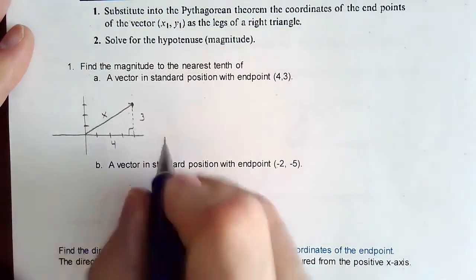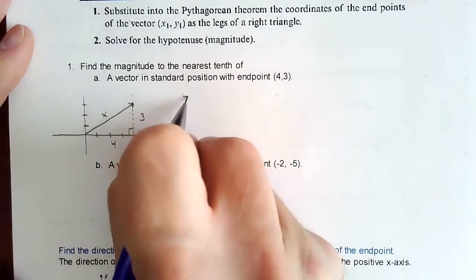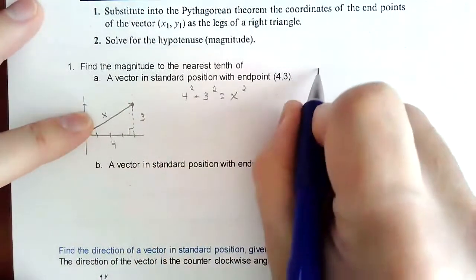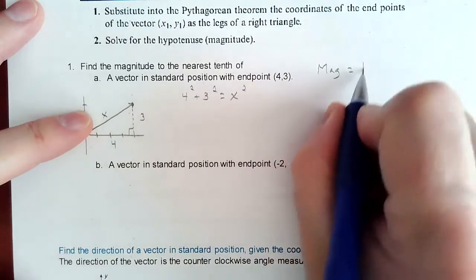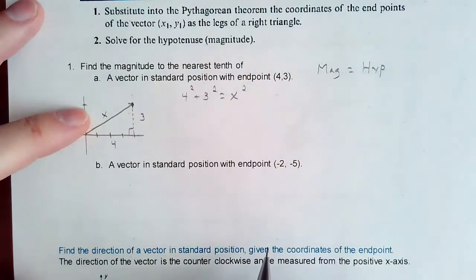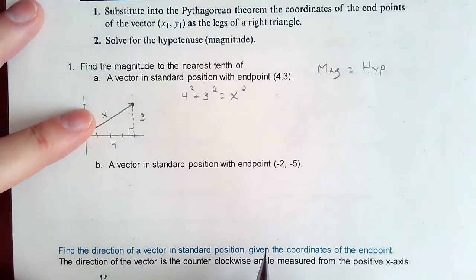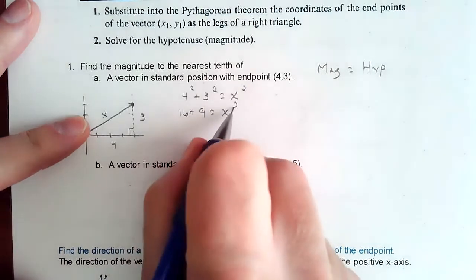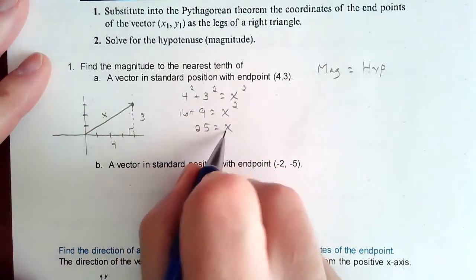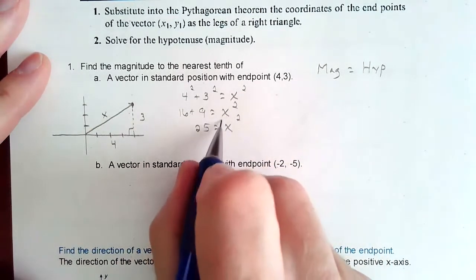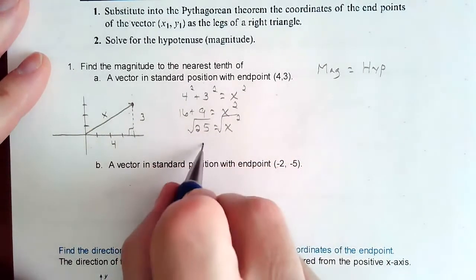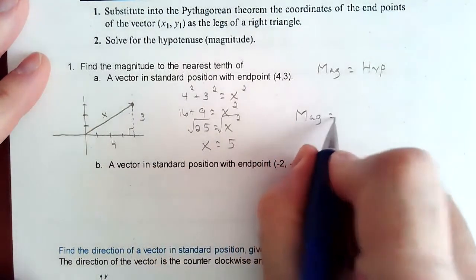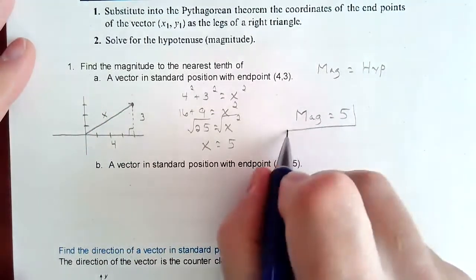So if I'm going to find that length right there, that's just Pythagorean theorem. So 4 squared plus 3 squared is going to equal the hypotenuse squared. So your magnitude is equal to hypotenuse. Same idea, same concept. So this is 16, this is 9, equals x squared, that's 25 equals x squared. To get rid of the square on that, we would square root both sides. So our x would be 5. So our magnitude would equal 5. So the length of that would be 5.